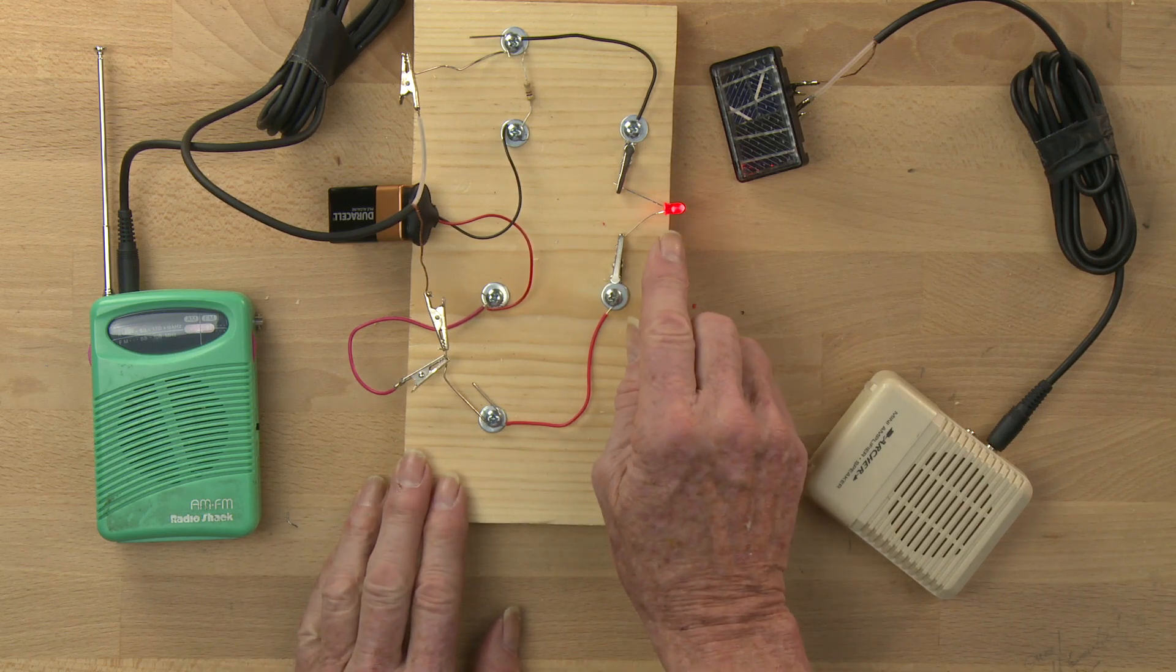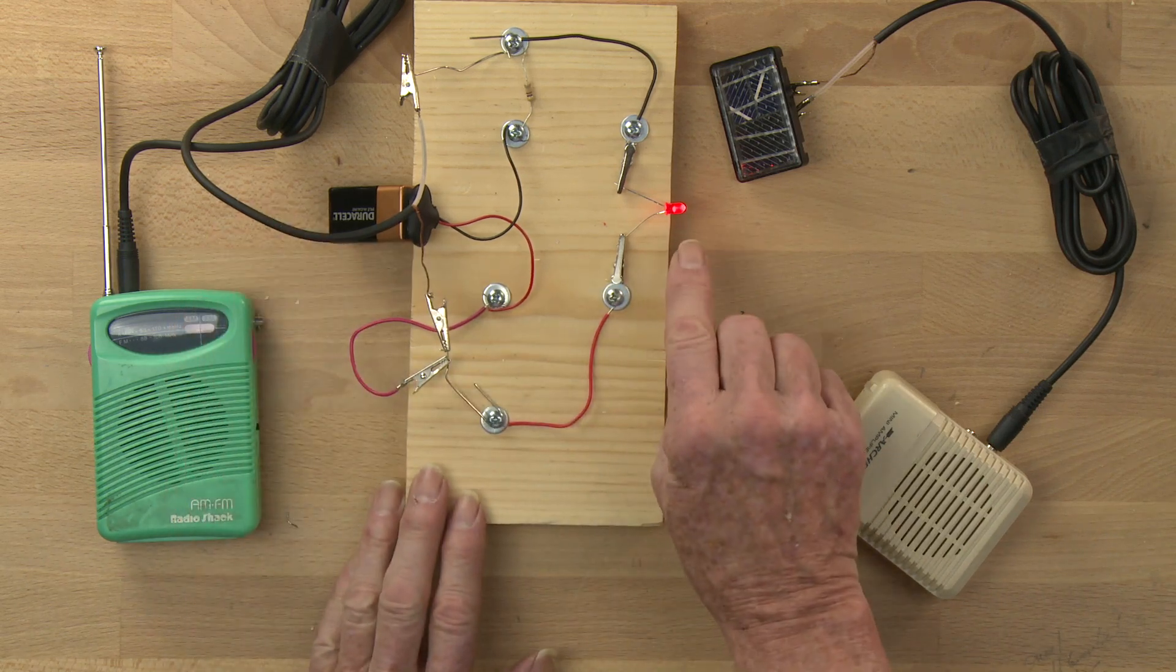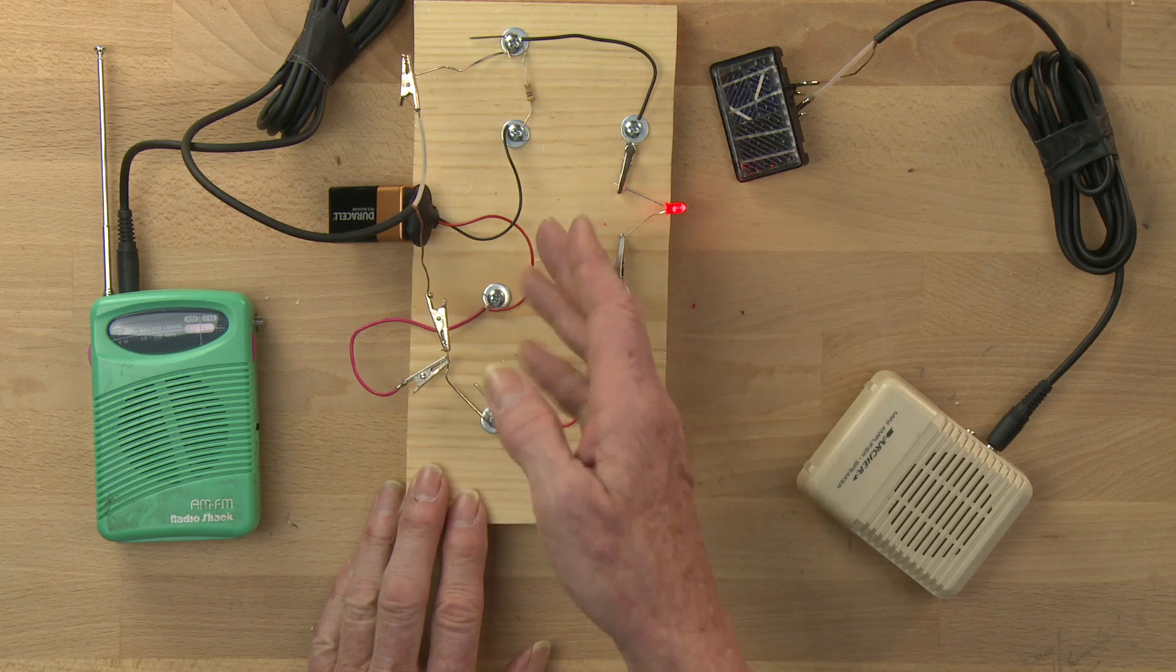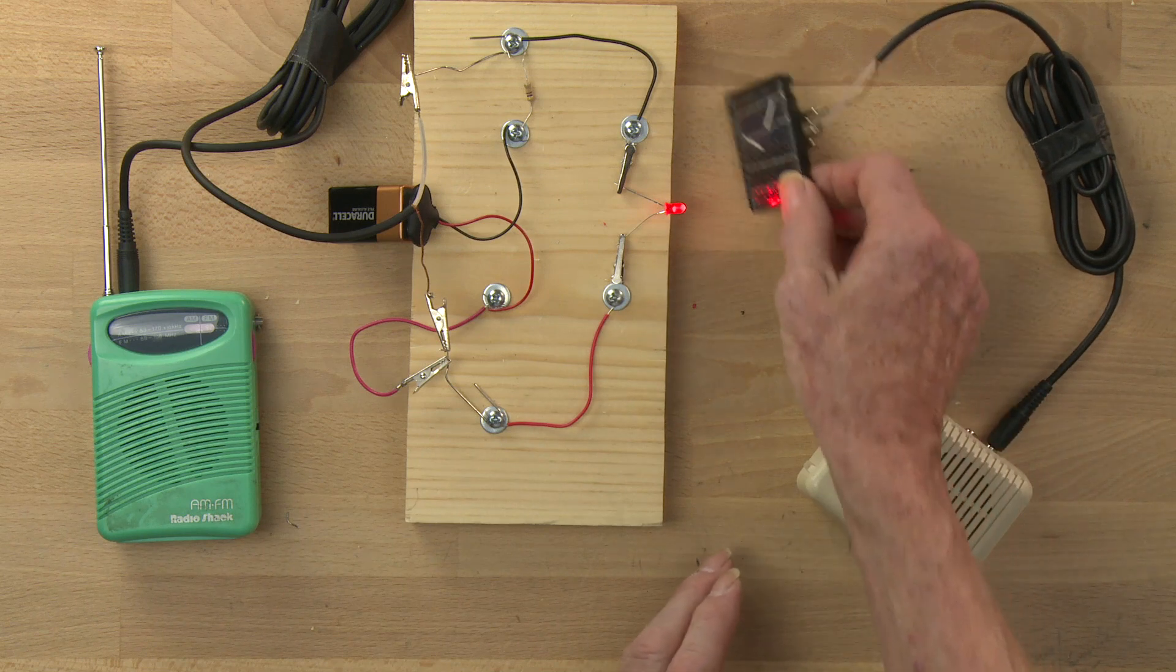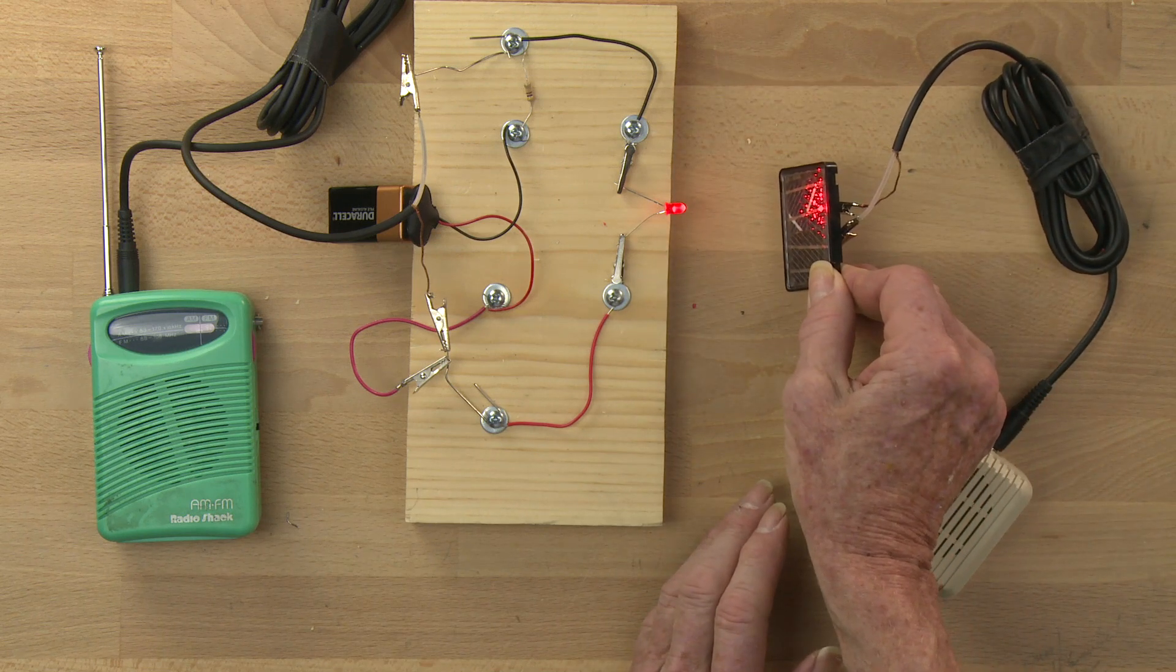So now I have a lit LED, and the audio signal is making it get brighter and dimmer as it adds into our DC signal. Now that brighter and dimmer light shines through space onto this solar cell.